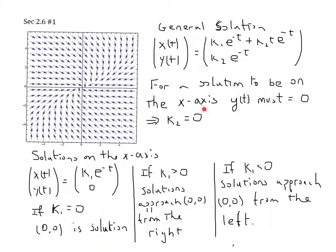For a solution to be on the x-axis, y(t) must equal 0 because every point on the x-axis has a y value of 0. And that will happen if k₂ is 0. So, solutions on the x-axis look like this: x(t), y(t), the y is always 0. Because k₂ is 0, this term drops out, and x(t) is just k₁e to the minus t.